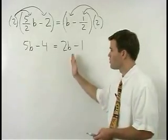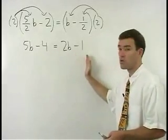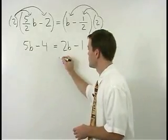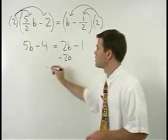Now we can move our b's to the left side of the equation and numbers to the right. And we start by subtracting 2b from both sides.